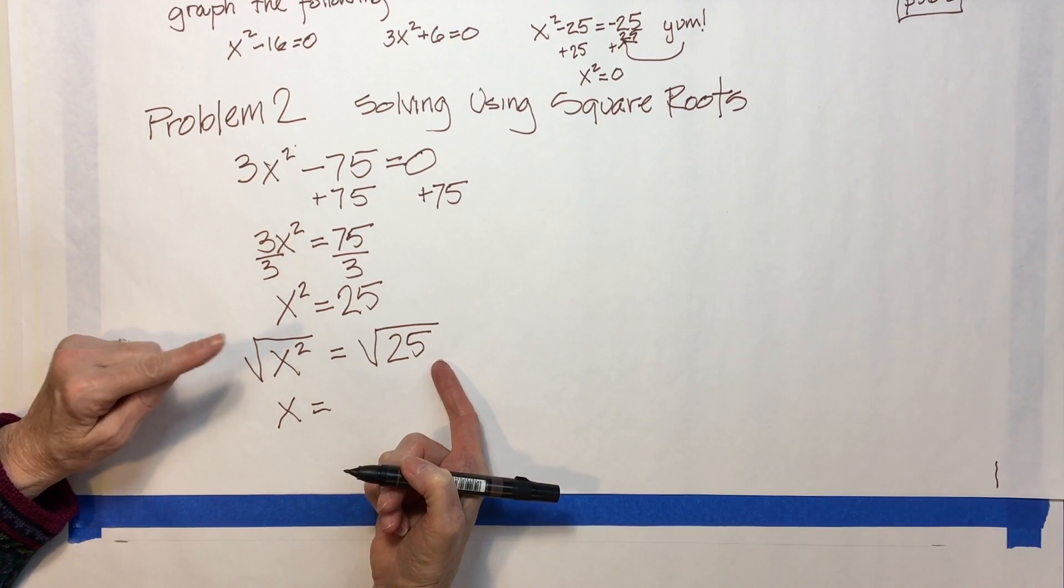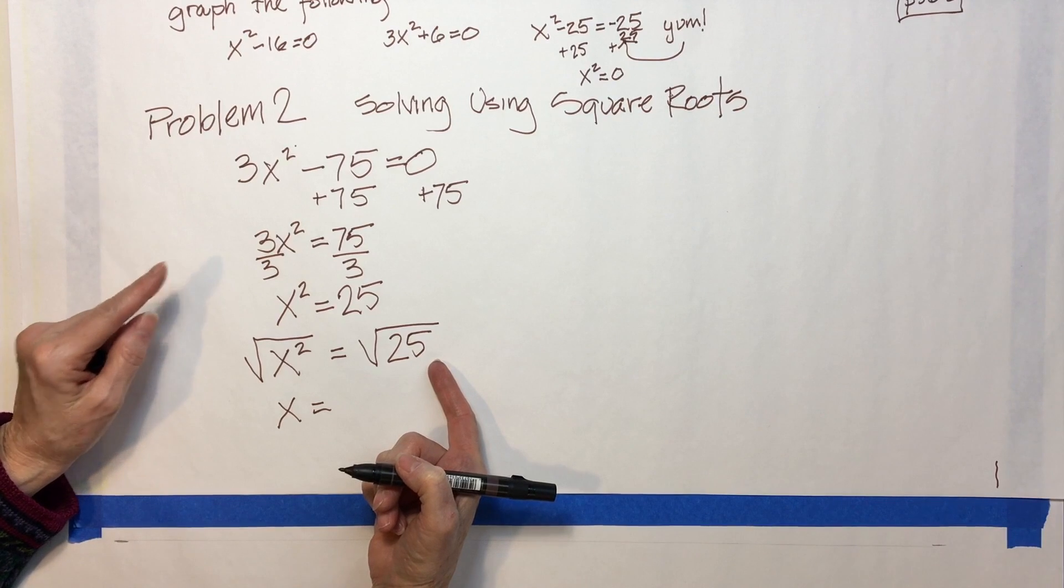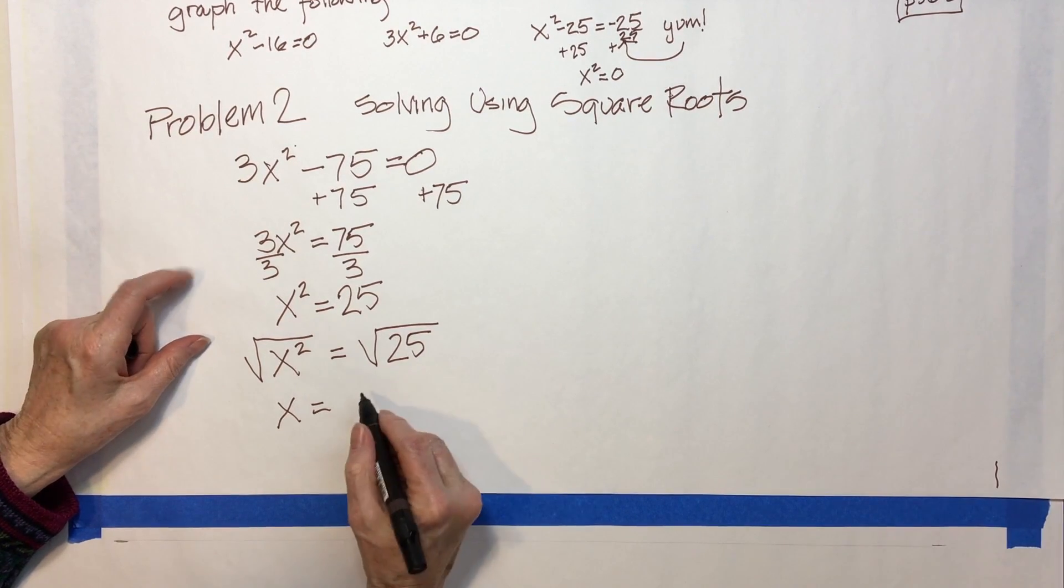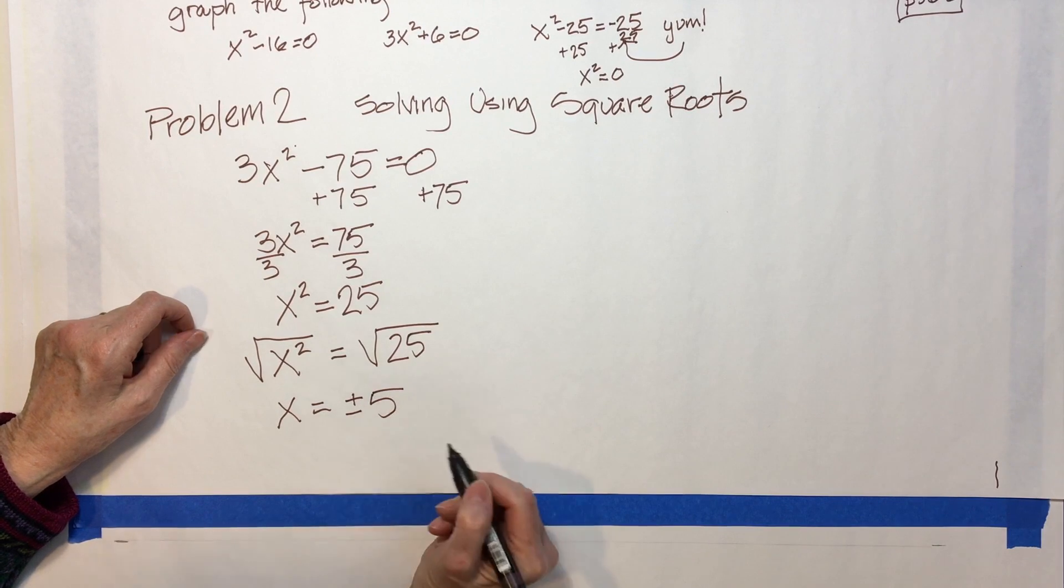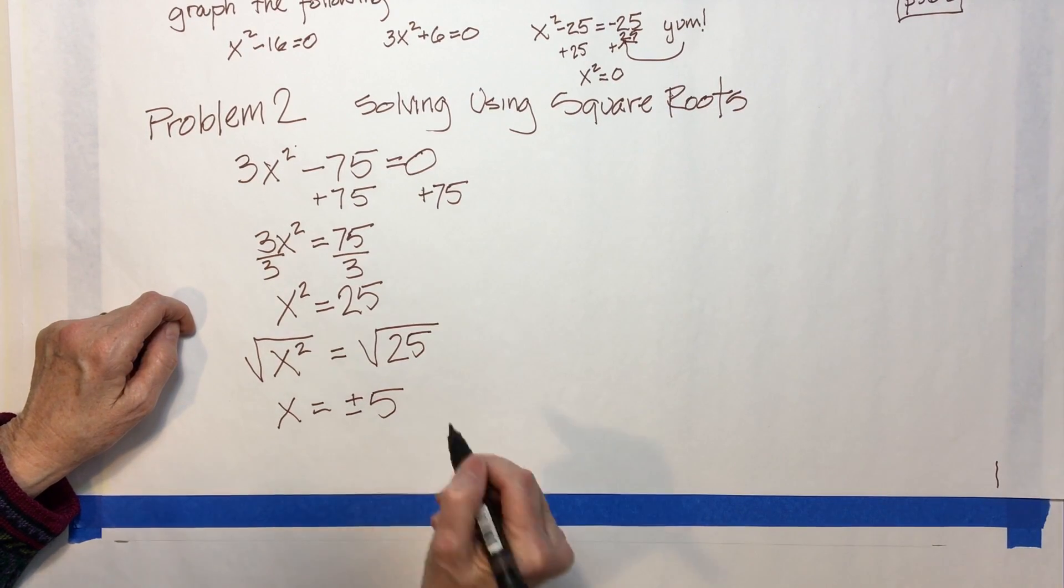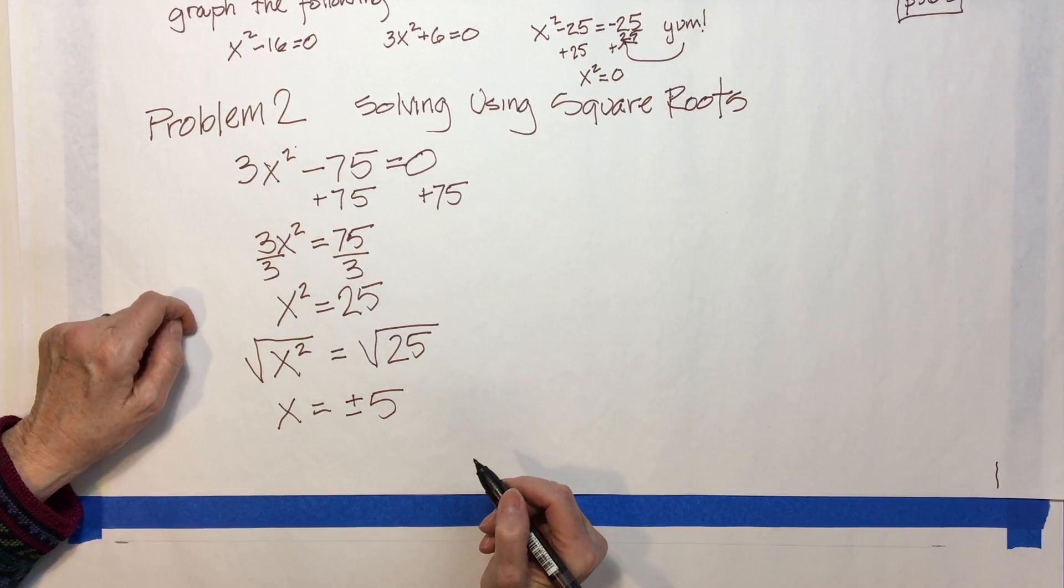But you also must remember that it could have been negative 5, so it's plus or minus 5. And that's sort of fun, right?